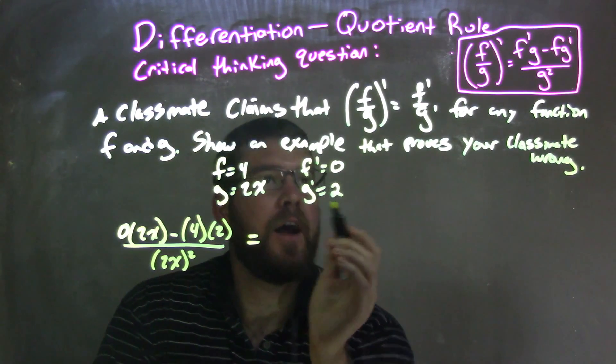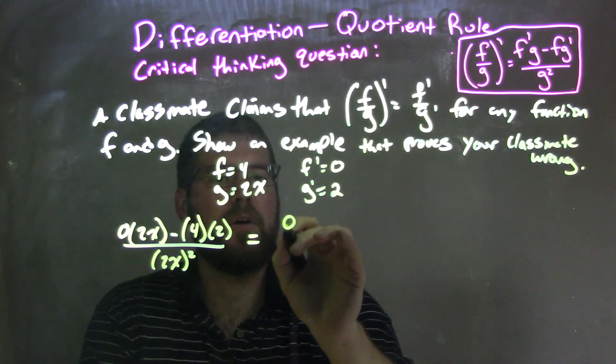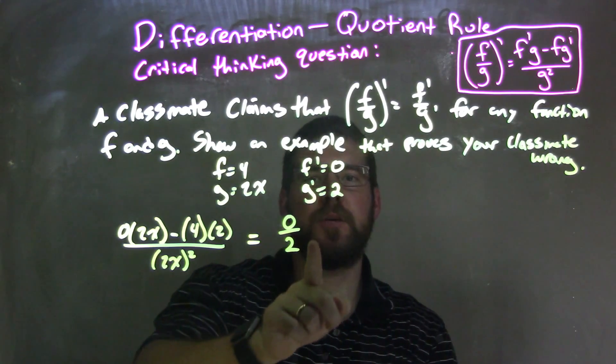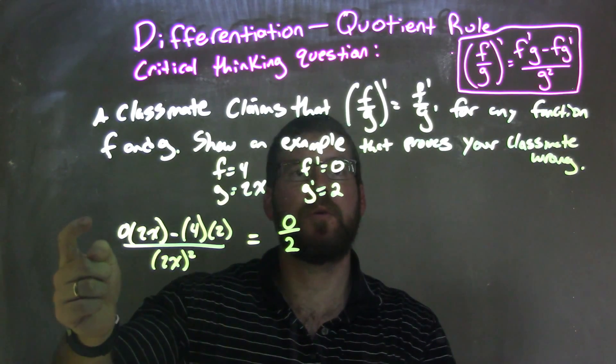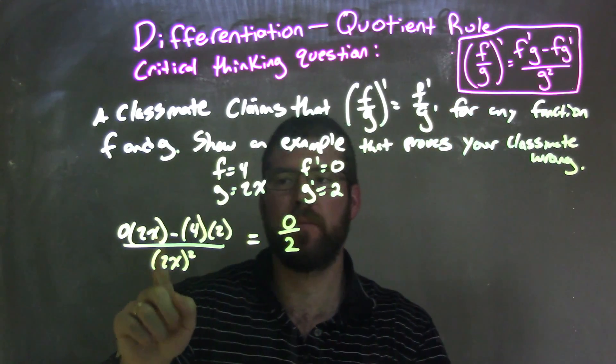So on the right-hand side, they've said, okay, what about f prime over g prime? So that's when we put 0 over 2. So now I have my f prime over g prime right here, and then I have my quotient rule, which is f over g all prime, which I set up right there, and I apply the quotient rule right here.